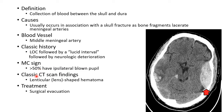The classic CT finding in epidural hematoma is a lenticular, that is lens-shaped, hematoma. This picture shows a CT image of an epidural hematoma — as you can see, there is a lens-shaped hematoma. The treatment of epidural hematoma is surgical evacuation.